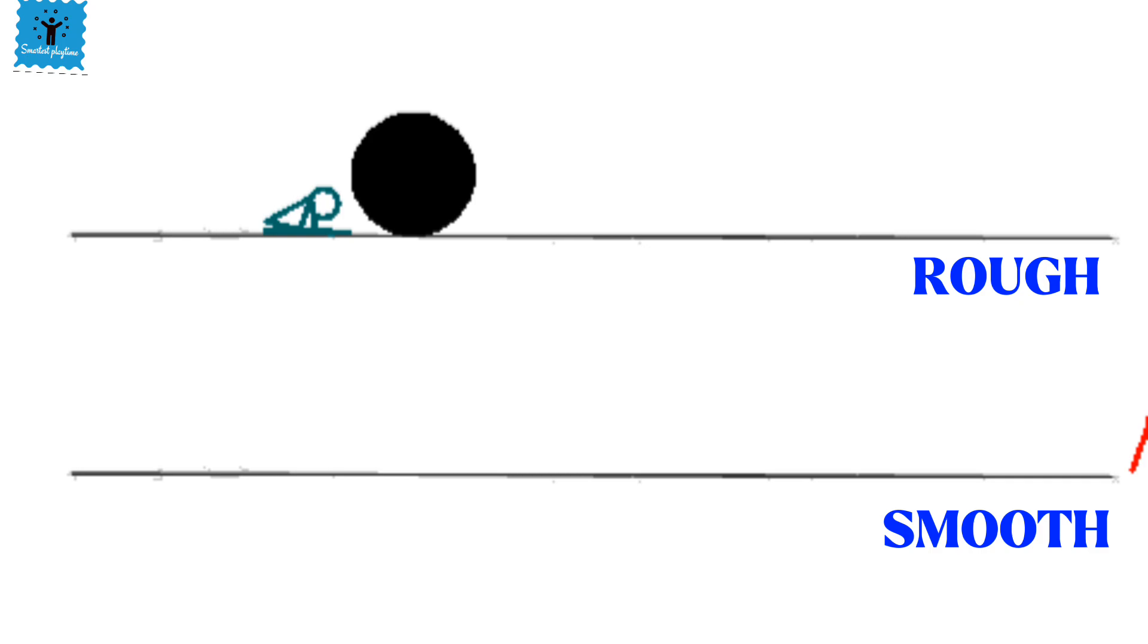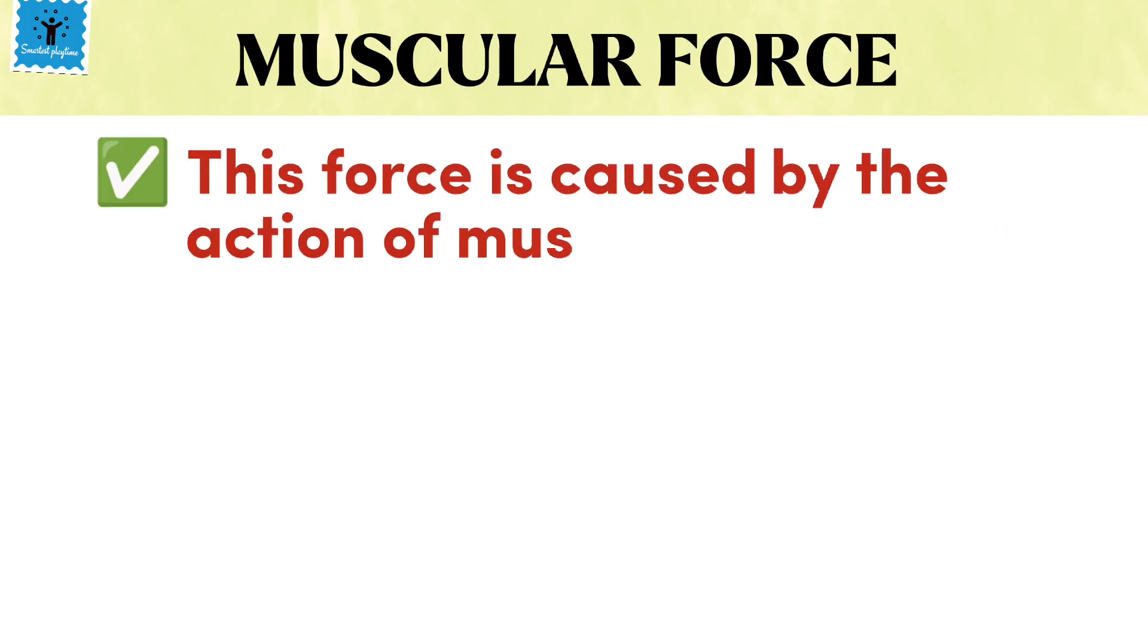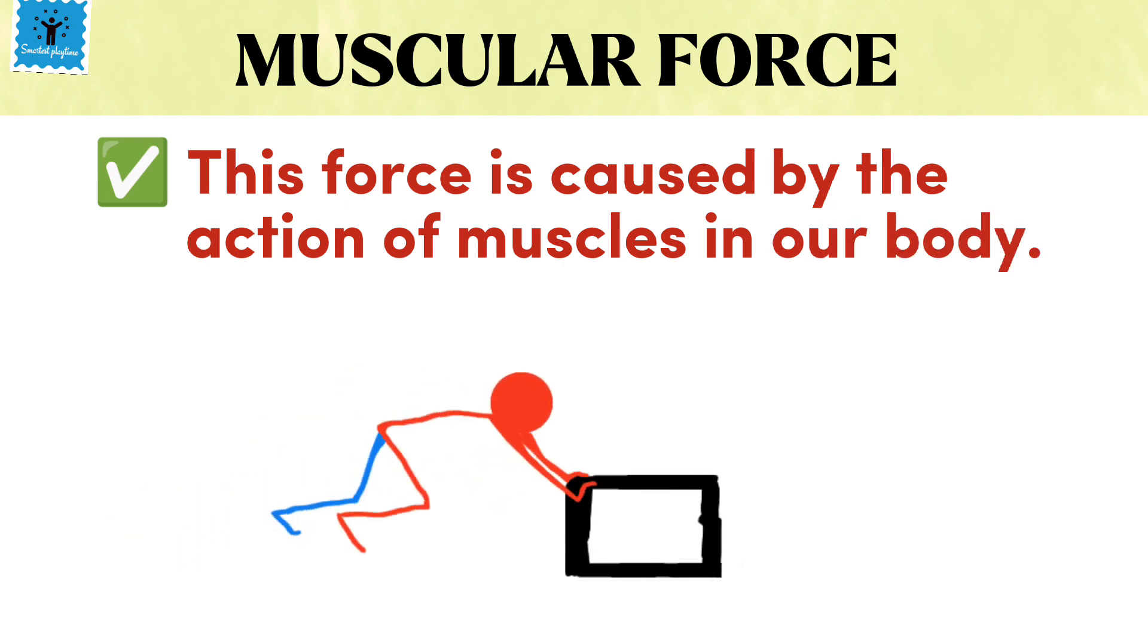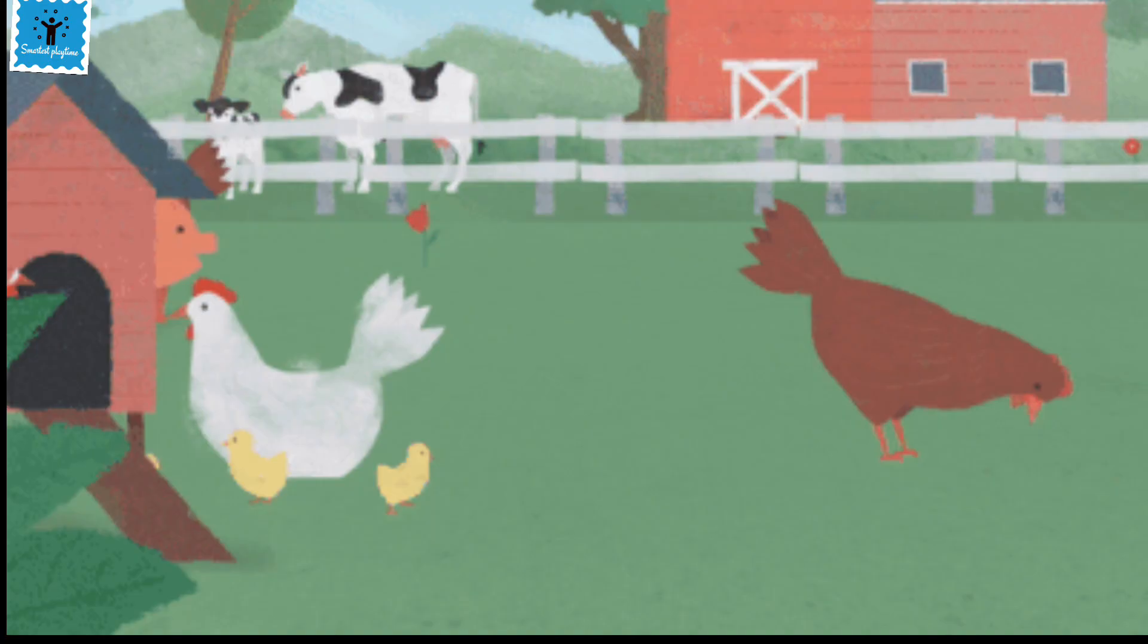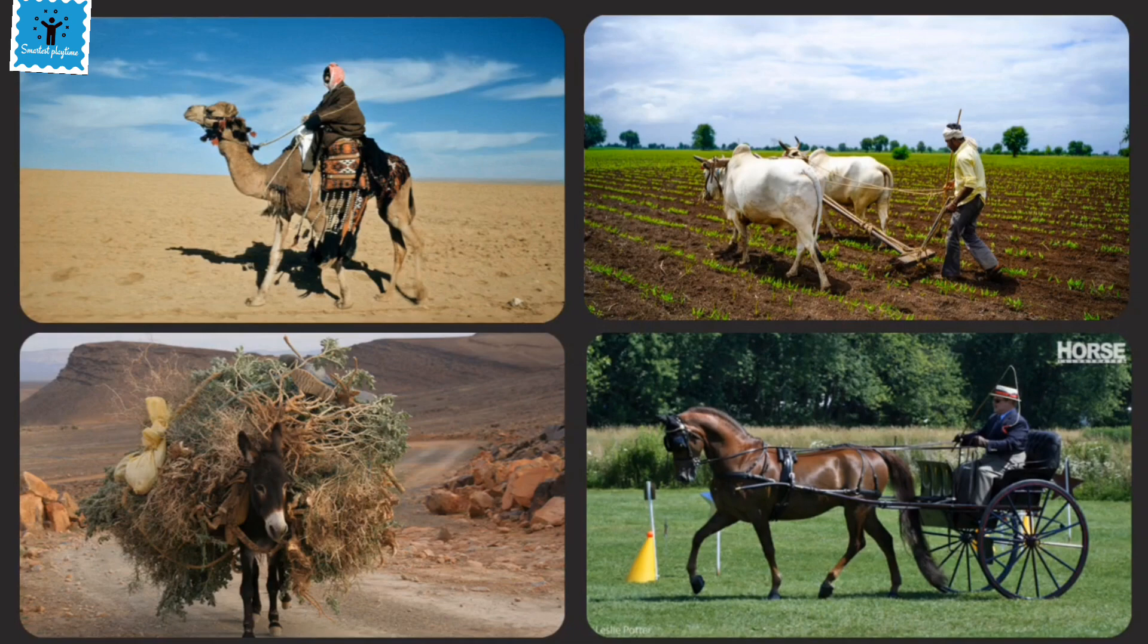The second category of contact forces is muscular force. This force is caused by the action of muscles in our body. The force resulting from the action of muscles is known as muscular force. It is muscular force that enables us to perform all activities involving movement or bending of our body. Animals also make use of muscular force to carry out their physical activities and other tasks. Animals like bullocks, horses, donkeys, and camels are used to perform various tasks for us, and in performing these tasks they use muscular force.